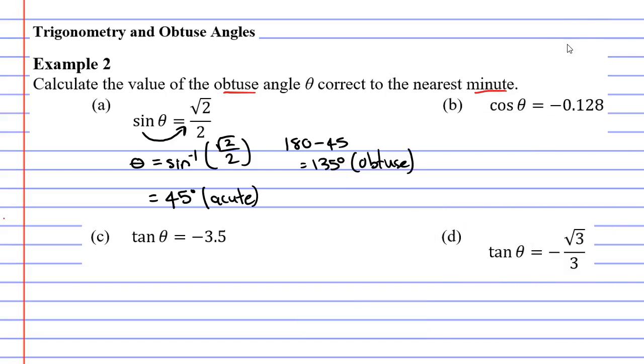So let's now move on to question B. Same thing again. Bring cos to the other side. Theta equals inverse cos, or cos to the negative 1, of negative 0.128 this time. What are we going to get?